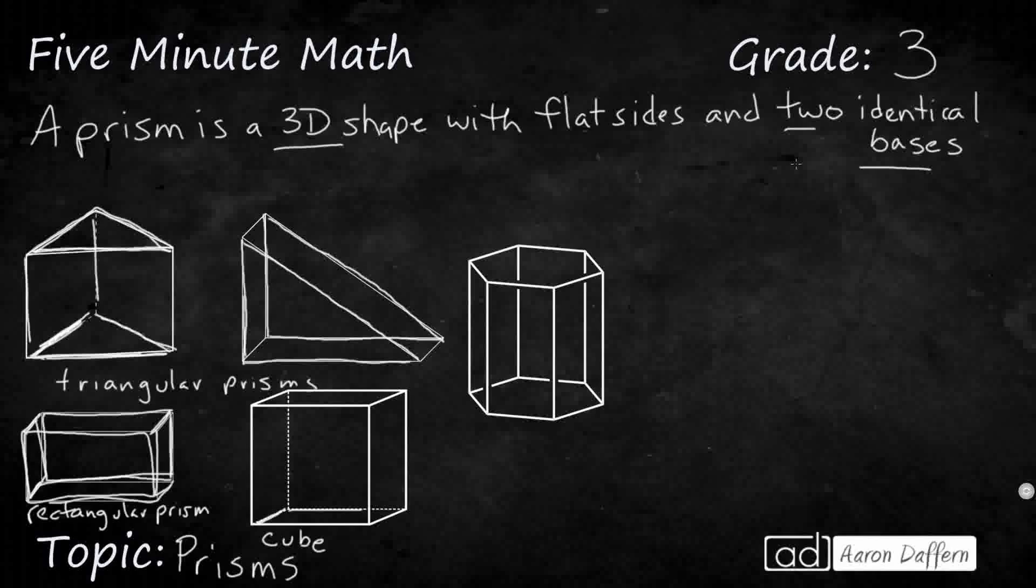So this is a cube here, and all six faces are squares, and they are all identical. So a cube is a type of prism that simply has six identical faces. All six faces are squares.